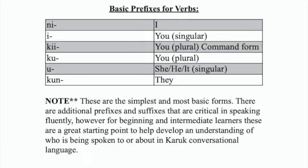U, which is he, she, or it — singular. And kun, which is they. There are other prefixes and prefixes with suffixes that help identify who you're talking to or who you are talking about. But this is a great way to start and this is the most common for what I have experienced most people speak to or about.